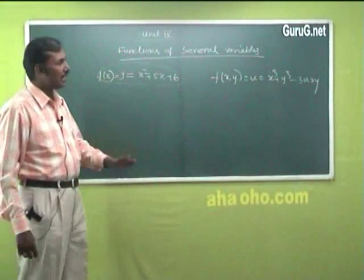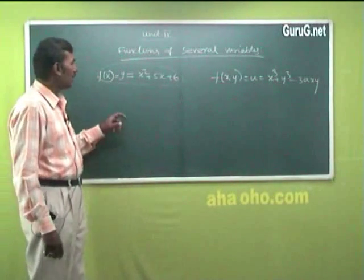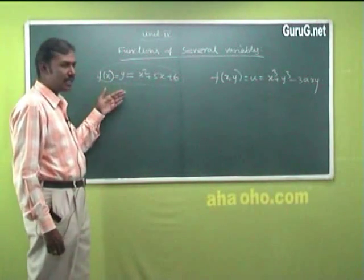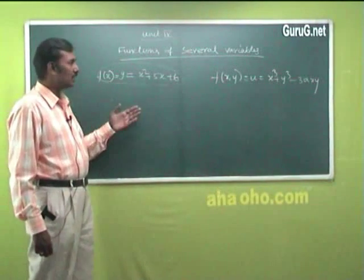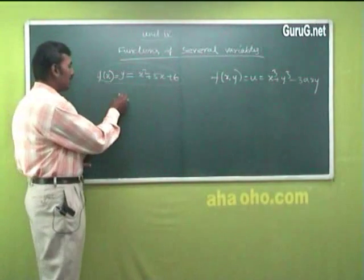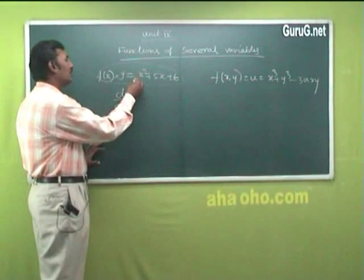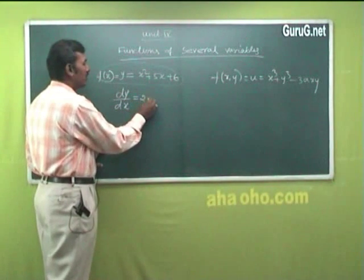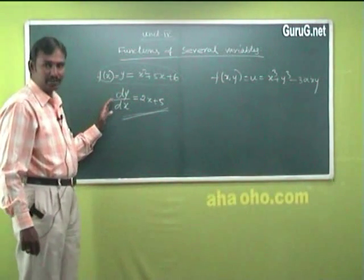Now we are all familiar with derivatives — ordinary derivative and partial derivative. Suppose a function has only one independent variable, we go for ordinary derivative. What do you mean by a derivative? A rate of change of a dependent variable with respect to an independent variable. For example, dy/dx means a rate of change of y with respect to x — you differentiate with respect to x.